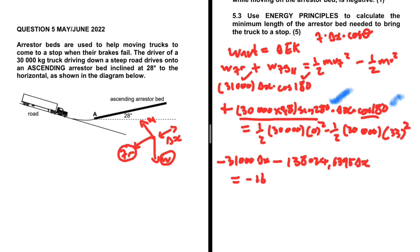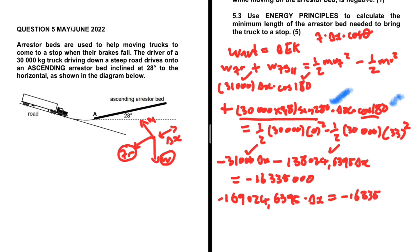Combining the left-hand side terms: minus 31,000 minus 138,024.64 gives minus 169,024.64, multiplied by delta x. This equals minus 16,335,000. Dividing both sides by the coefficient of delta x: delta x equals 96.64 meters. That is the minimum length of the arrestor bed needed to bring the truck to a stop.